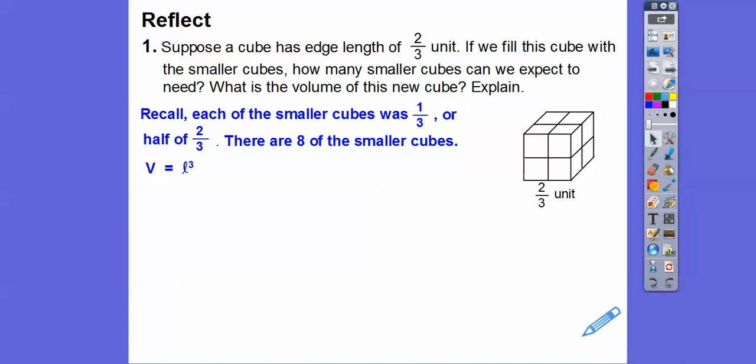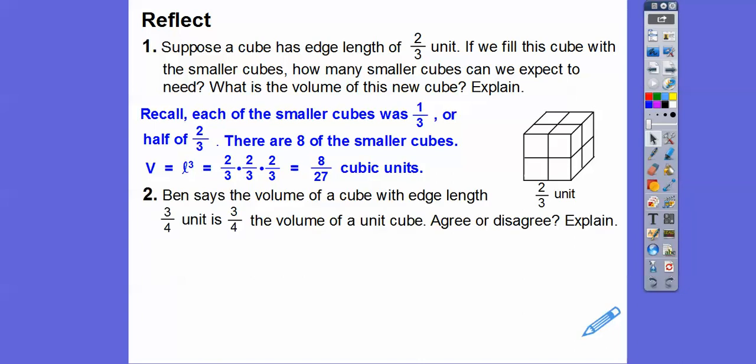And so the volume equals L times L times L, or L cubed, so 2/3 times 2/3 times 2/3. So 2 times 2 is 4, 4 times 2 is 8, 3 times 3 is 9, 9 times 3 is 27, so I see 8/27ths right there. Cubic units - remember, volume is always cubic units right there.